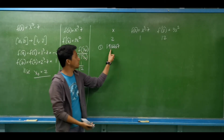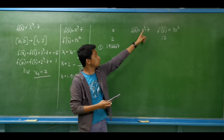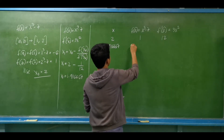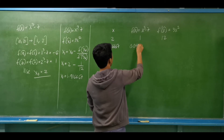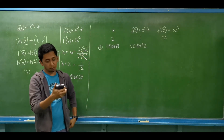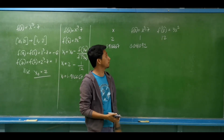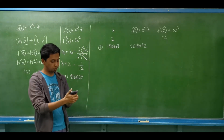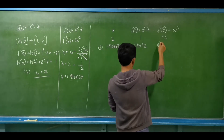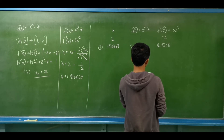Now we compute f of x using 1.916667. That gives us 0.041092. Then we compute f prime of x, which is 3 times 1.916667 squared, giving us 11.020837.